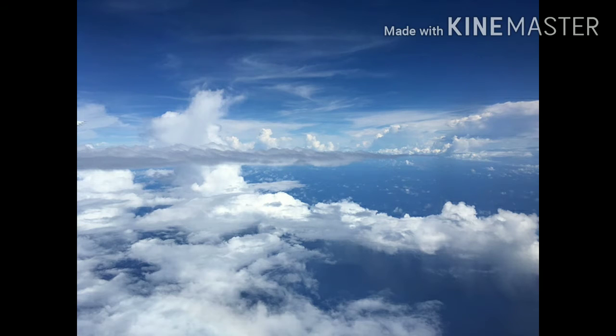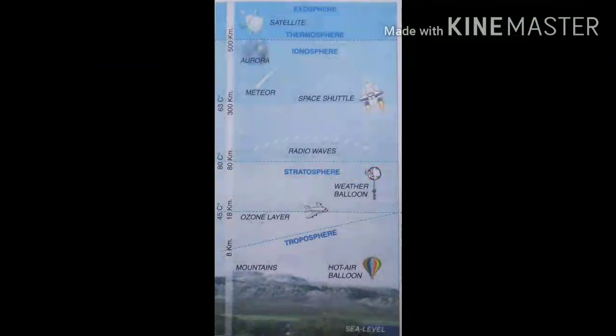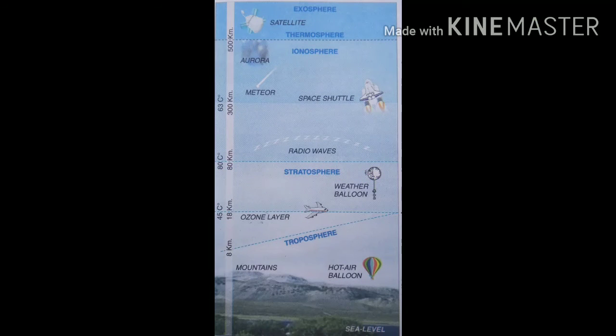Layers of the atmosphere: The troposphere is the layer of the atmosphere where life exists. The stratosphere is the next layer. The ozone layer, which absorbs most of the sun's harmful ultraviolet rays, is in the stratosphere.